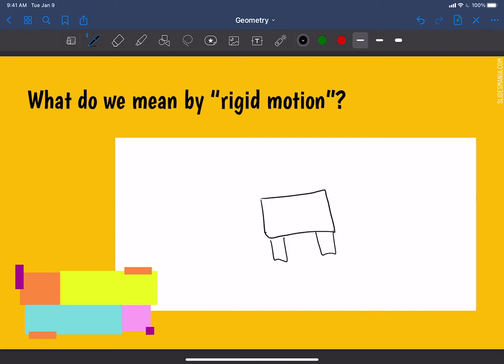That coffee table, you can't change the size or the shape of it unless you destroy the coffee table, get rid of it. So rigid motion is kind of the same idea. It's something that you can't change the size or shape of.